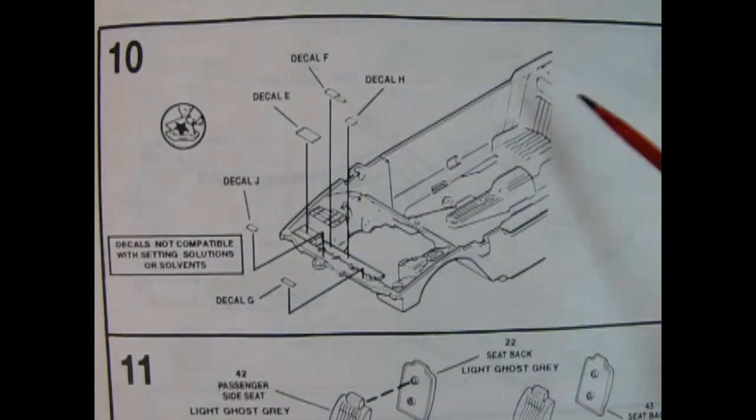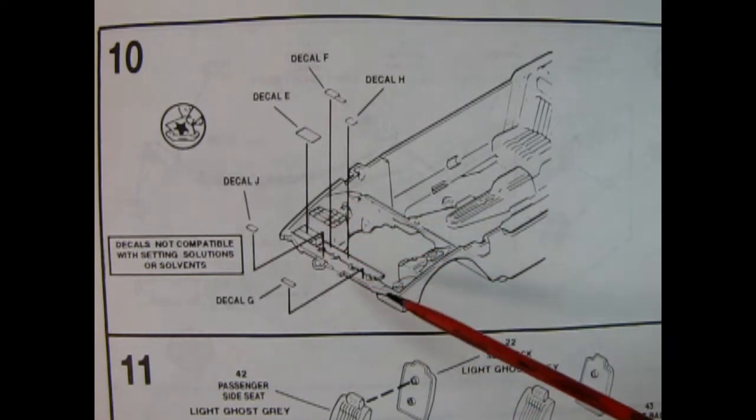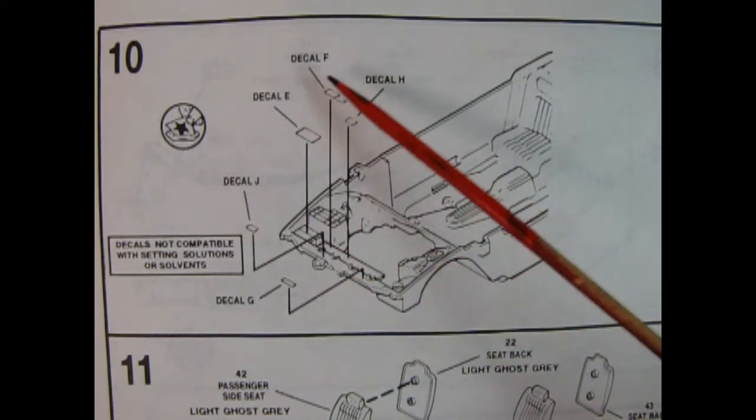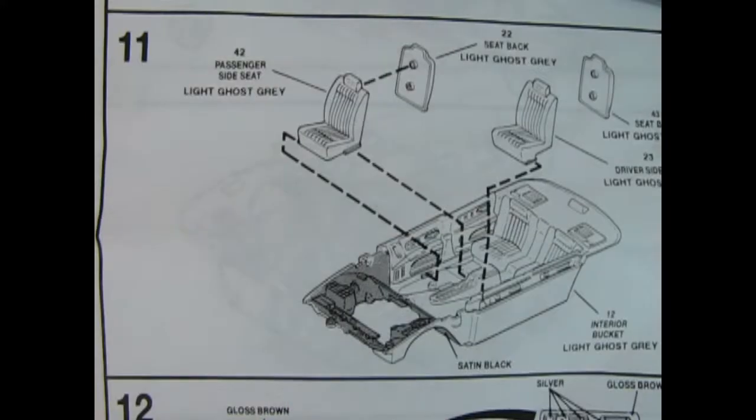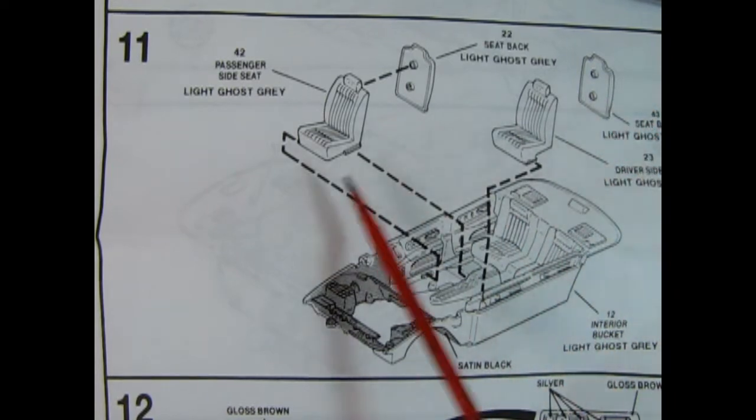Here we have panel ten and this is our interior tub. It also has the inner fenders and it says to add on all these decals but there's a note: decals not compatible with setting solutions or solvents. So be careful there that you don't put that on and then put on some solva set and these things are all chewed up and gone. Panel eleven shows the front seats and seat backs being put together and then those drop into that interior.